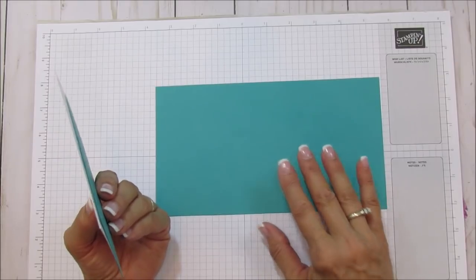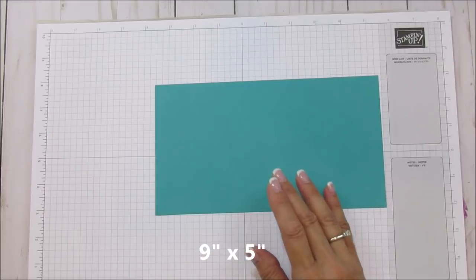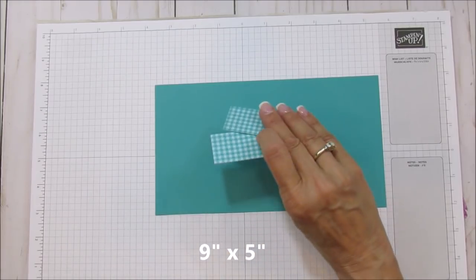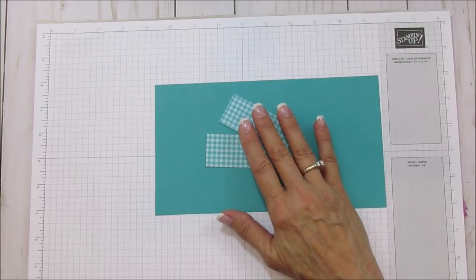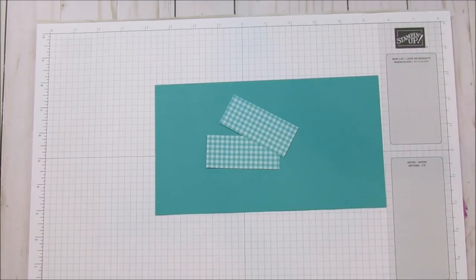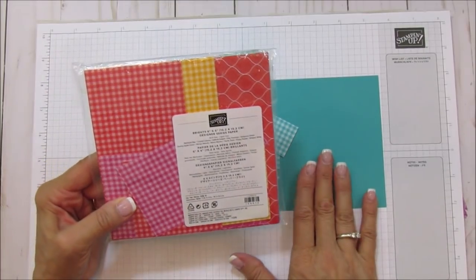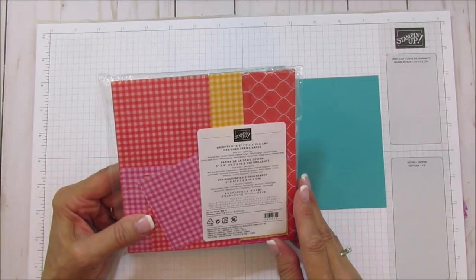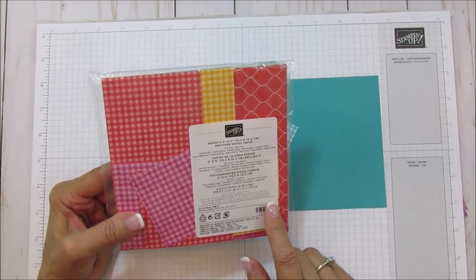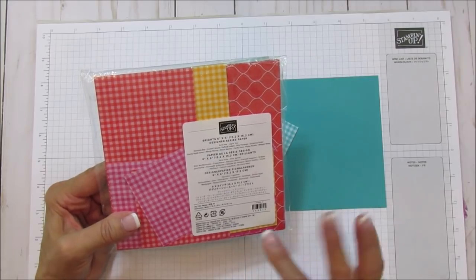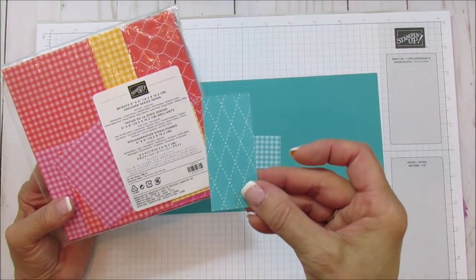This piece is nine by five. You're gonna need two pieces to mat. This is our new six by six designer series paper pack. I'm using the soft seafoam from the subtles. This one is in the brights collection. It comes in all our color families with four sheets of each and four different designs.